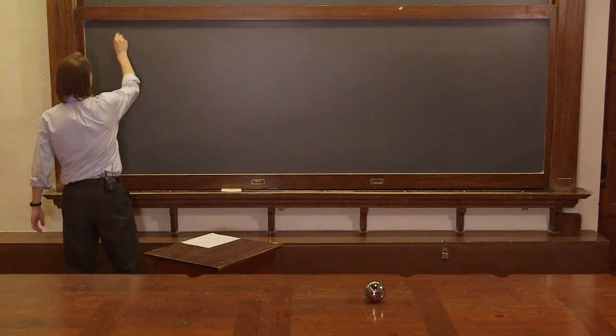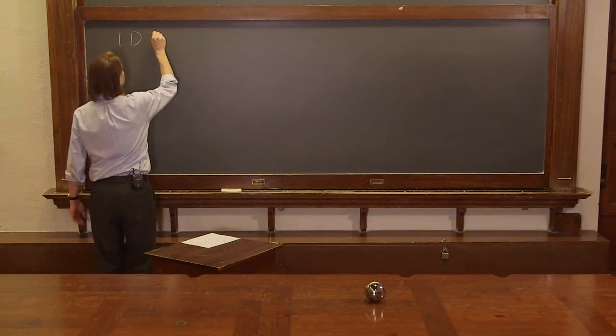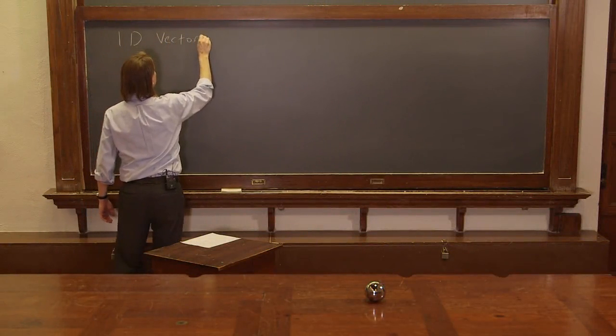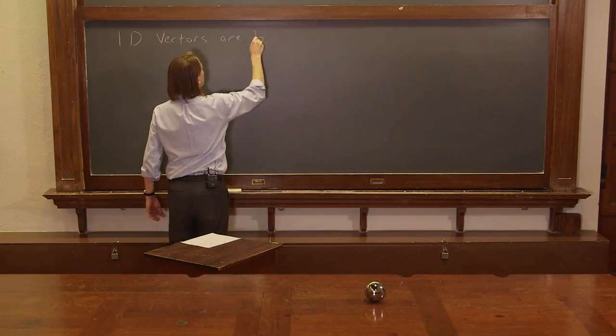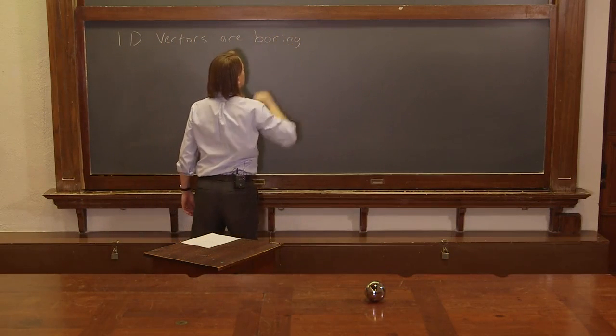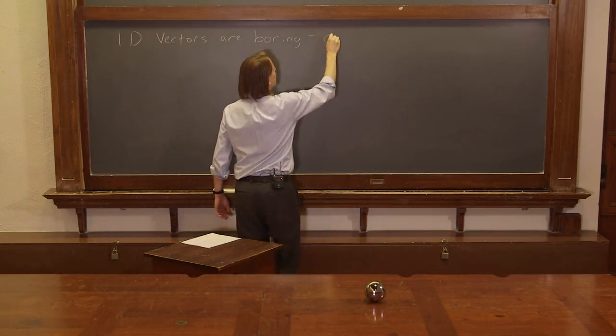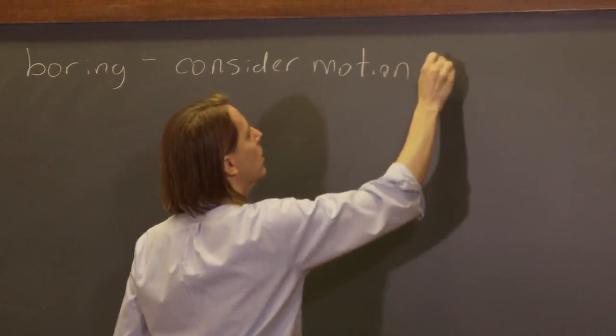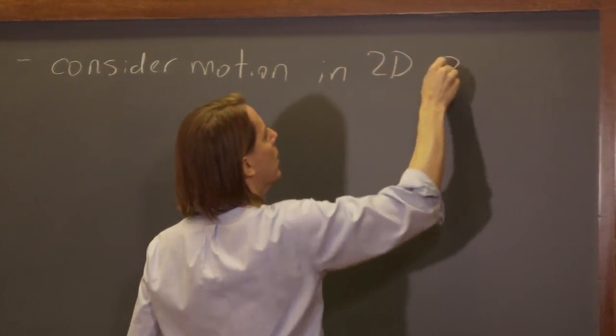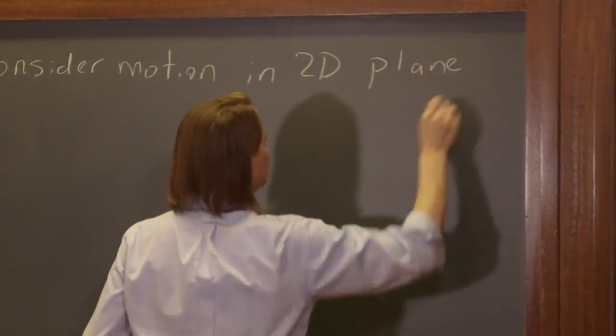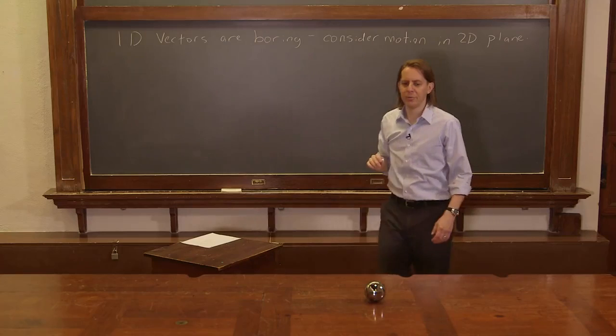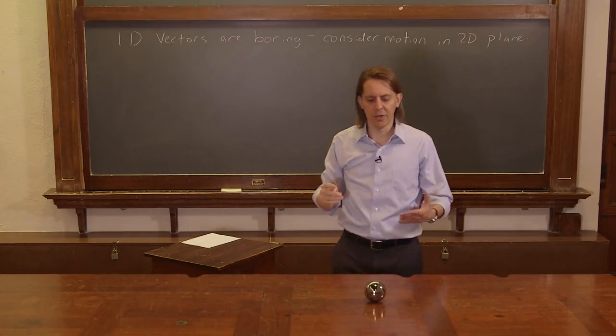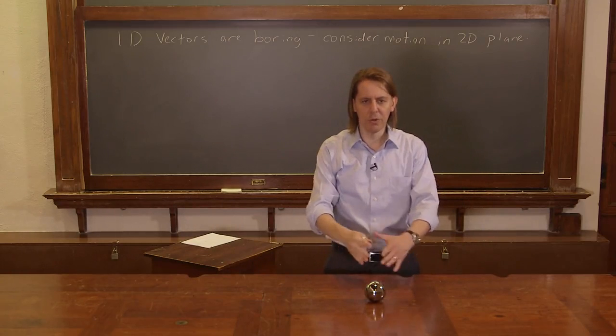Vectors. Here we go. One-dimensional vectors are boring. Let's consider motion in a two-dimensional plane, because that's really where you're going to need vectors anyway, when you get into two dimensions. To show you that, I have freed Hal from his one-dimensional prison.